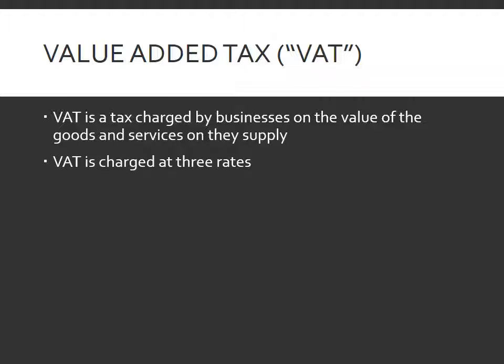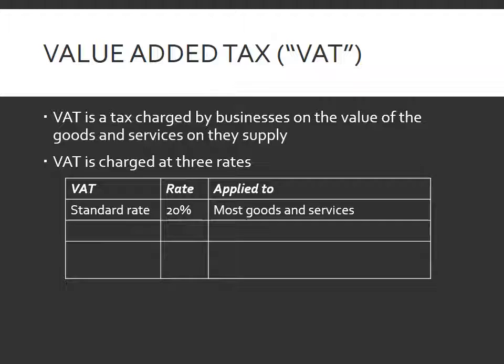VAT is charged at three rates. There is the standard rate, which is charged at 20% of the net value of the goods and services, and that applies to most goods and services. There's also a reduced rate of 5%, which is only applied to a small number of goods and services, for instance, home energy bills.